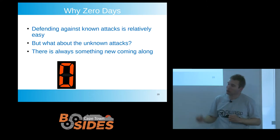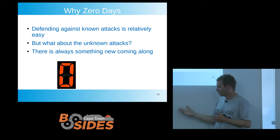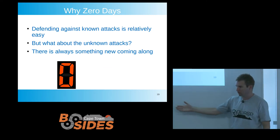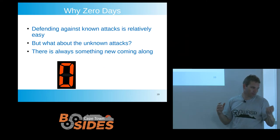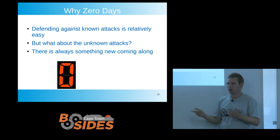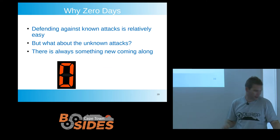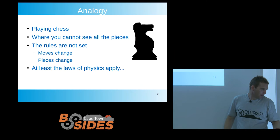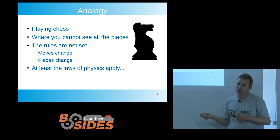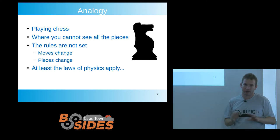Why zero days? Defending against a known attack is actually quite simple — there's a bug, patch it; there's a configuration issue, fix it. But what about unknown attacks? That's a lot more interesting. There's always something new coming along, so even if we discover and patch everything and configure it right — the new version of software is going to come with all new bugs to replace the old ones that they fixed, as anyone who's done software dev knows. The analogy I like: it's playing chess but you can't see all the pieces, the rules are not set, the pieces change — hopefully at least the laws of physics apply.